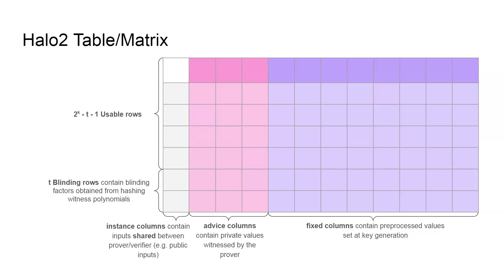There is an analogy between chips and the notion of a function in software — you take something, encapsulate it into a chip, and it can be used by different circuits. You can just plug it in. It's similar to a function in software, but here since we're fiddling with tables it looks more like a hardware circuit. You can have a library of chips and reuse them as needed. There are obviously security issues around column collision or cell collision between chips. You can think of chips as templates in Circom — like a library of Circom templates.